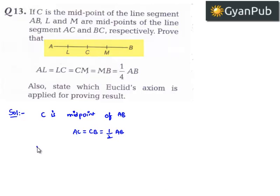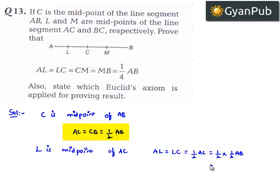And also L is midpoint of AC. That implies AL is equal to LC is equal to half times AC. That is equal to half times AC, we have it as half times AB. That is equal to 1 by 2 times 1 by 2, which is nothing but 1 by 4 AB. Let this be the first result.